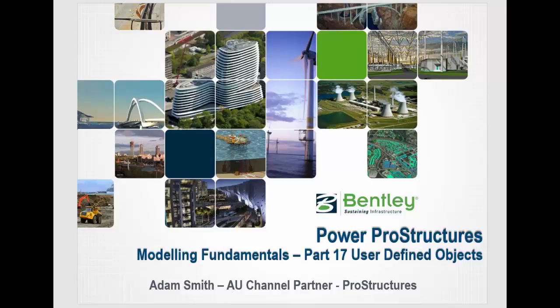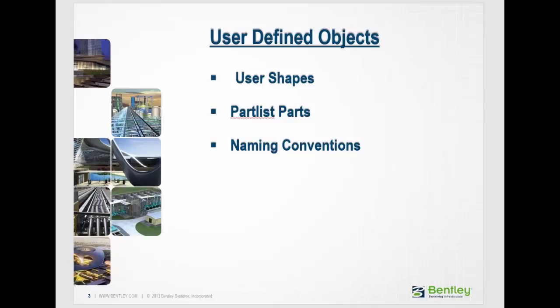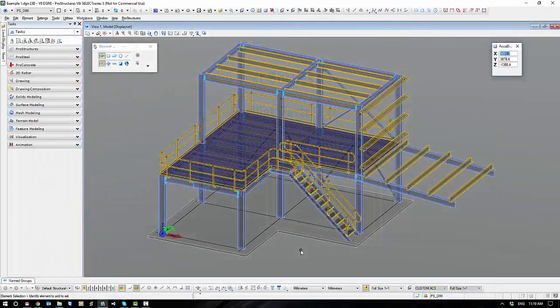In this session of Modelling Fundamentals, Part 17, we look at user-defined objects that we can bring into our ProSteel environment. These could be user shapes, which are very handy for any type of non-standard object that the database doesn't normally accommodate for. Partless parts, which are solids bought in from a supplier or distributor, as well as naming conventions, which allow us to edit a database object like a UB, SHS, or RHS. We'll kick off with a user shape.